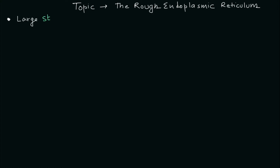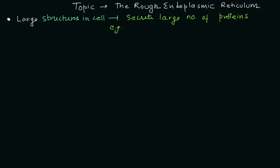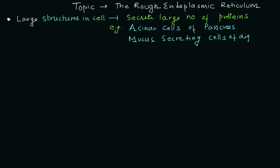Point number one: it's a large structure which is present in the cell. It is present in the cytoplasm. It is a membrane-bound organelle. It secretes a lot of proteins — that is the important function specifically of the rough endoplasmic reticulum. Examples of cells known to secrete a lot of proteins are acinar cells of the pancreas and mucus-secreting cells of the digestive tract. These are some examples where you have a lot of rough endoplasmic reticulum.